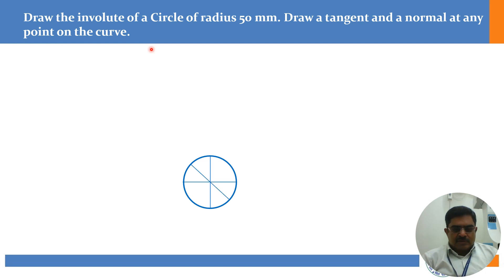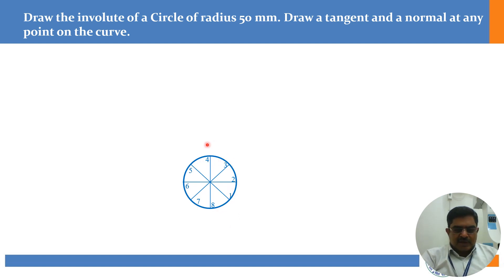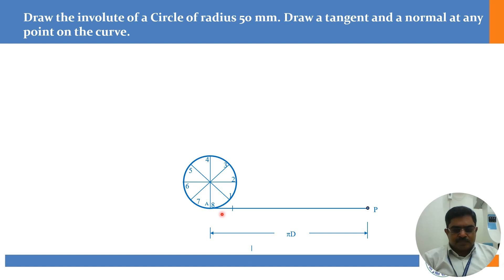Now these are the divisions. I am dividing this circle into 8 equal parts. Just giving notations 1, 2, 3, 4, 5, 6, 7, 8 in anti-clockwise direction. As usual, the perimeter you can calculate, and you mark 8 equal divisions along the generating line as well.